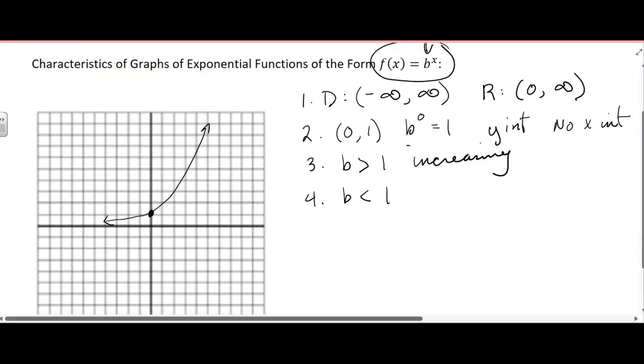If b is less than one but greater than zero, because it has to be greater than zero, so if it's between zero and one, like when we had one half, or you could have 0.3 or some kind of base like that, then it's a decreasing function, and it goes in this direction.